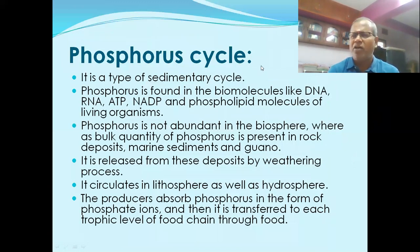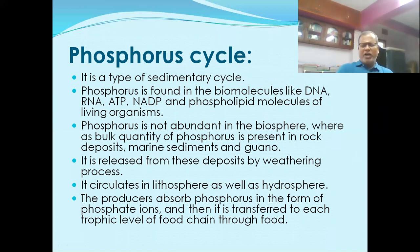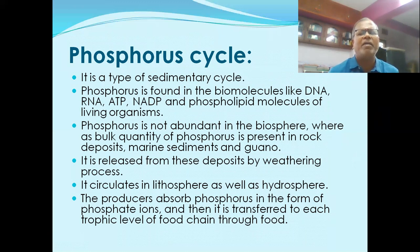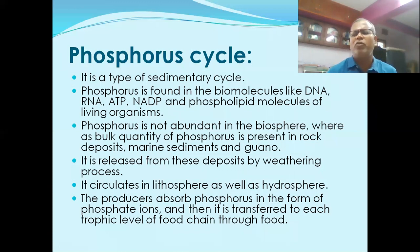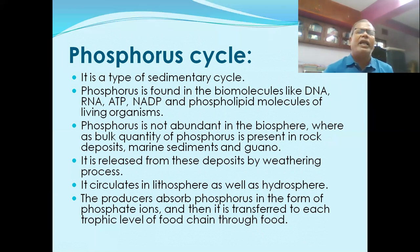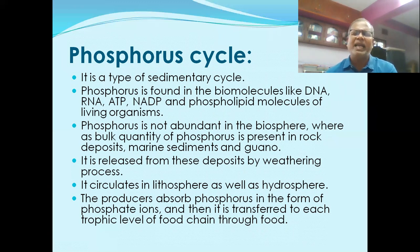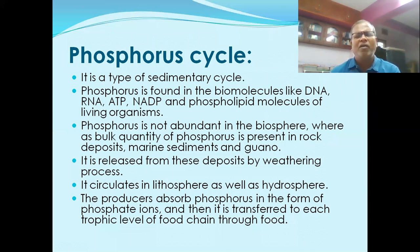Next we come to the phosphorus cycle. It is a type of sedimentary cycle. Phosphorus is found in biomolecules like DNA, RNA, ATP, and NADP. Phosphorus is not abundant in the biosphere. The bulk quantity of phosphorus is present in rock deposits, marine sediments, and so on.